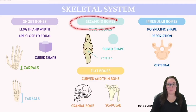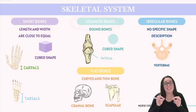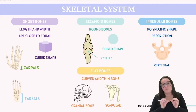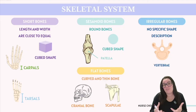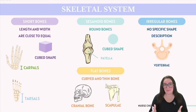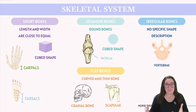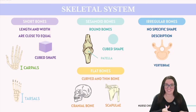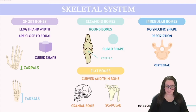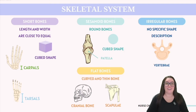Next up, we have sesamoid bones, and these are small, round bones that often resemble something like a sesame seed. These types of bones excel in handling pressure and are typically found embedded within tendons or muscles. A well-known example of a sesamoid bone is our patella, found in our knee.